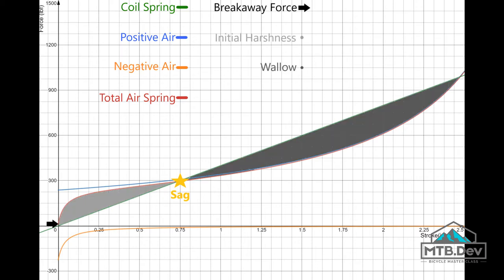Here we see the reduced initial harshness and lower breakaway point provided by the negative air spring. However, the negative air spring's initial curve is very steep, meaning that the shock will still feel harsh. Furthermore, the issue of wallowing still exists — we obviously need more negative volume.